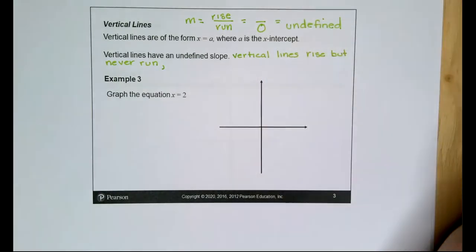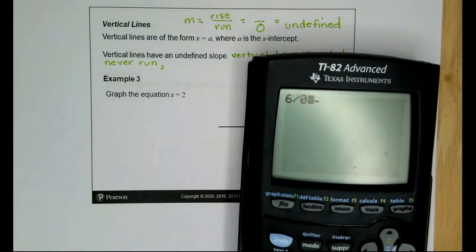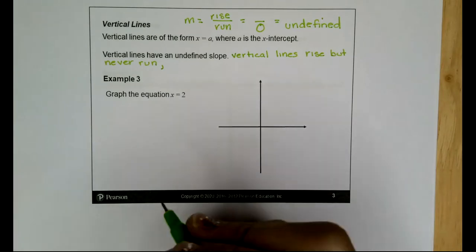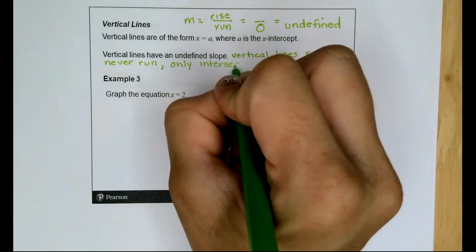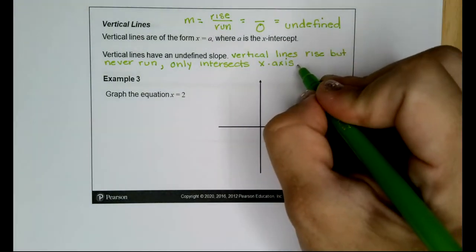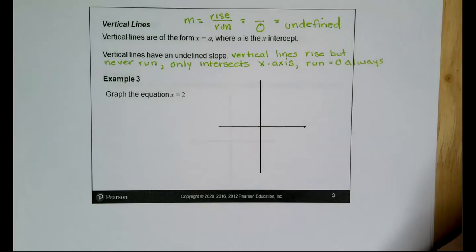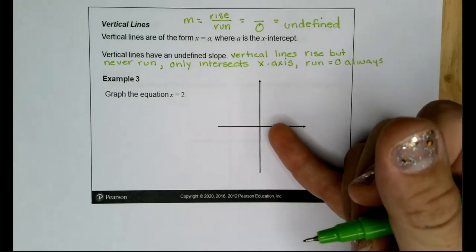We cannot divide any number by 0 — not even 0 divided by 0. A vertical line only intersects the x-axis, so the run is always equal to 0, which means the slope is always undefined. If it interacted with the y-axis at all, it would have a y-value, but it does not.